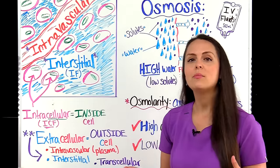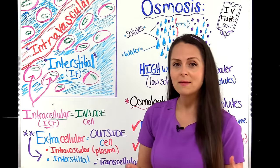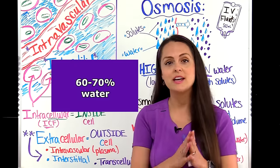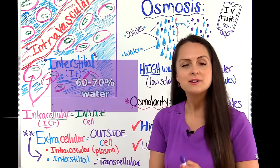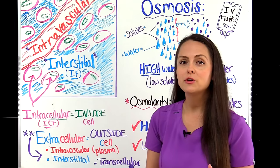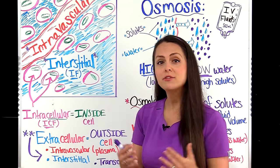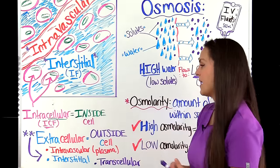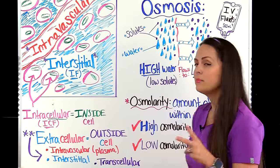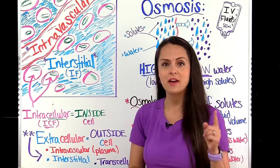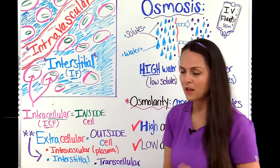The average adult body is made up of about 60 to 70% water — that is a lot of fluid. This fluid has to be stored somewhere, and there are two main compartments that store this fluid that I want you to remember.